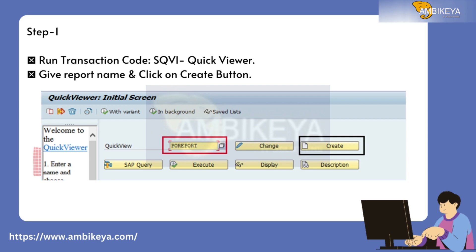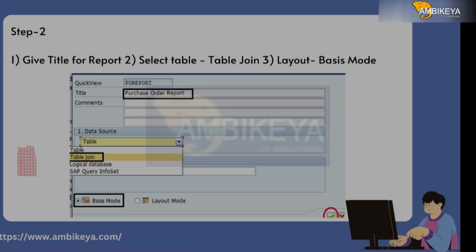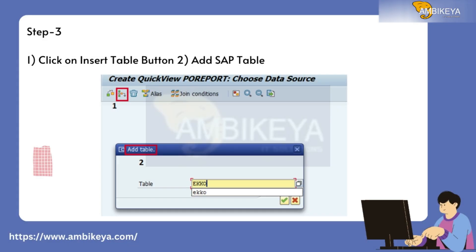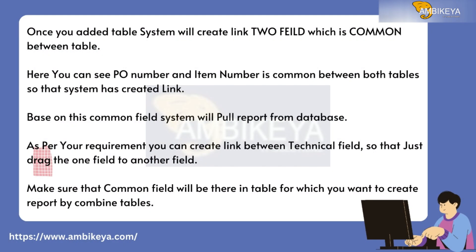Step 1: Run transaction code SQVI (Quick Viewer), give a report name and click on the Create button. Step 2: Give a title for the report, select Table Join, and set Layout to Basic mode. Step 3: Click on the Insert Table button to add the SAP table. Once you have added the table, the system will create a link to the field which is common between the tables.